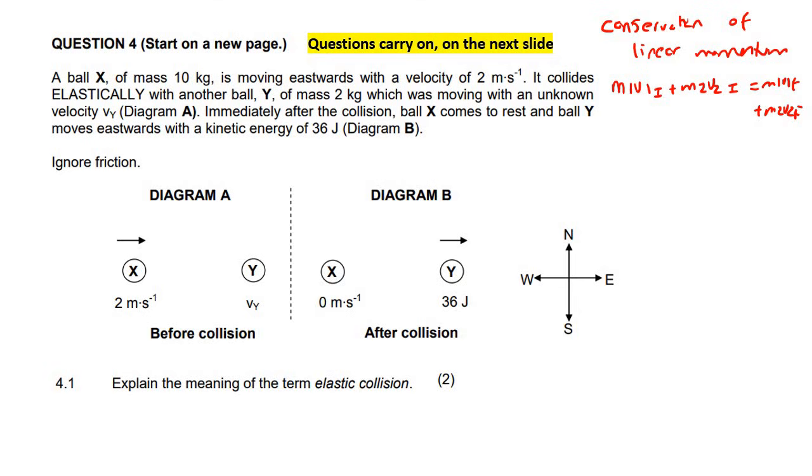We have a ball X of mass 10 kilograms, moving eastwards with a velocity of 2 meters per second. It collides elastically with ball Y of mass 2 kilograms, which was moving with an unknown velocity. Immediately after the collision, ball X comes to rest at 0 meters per second, and ball Y moves eastwards with a kinetic energy of 36 joules.